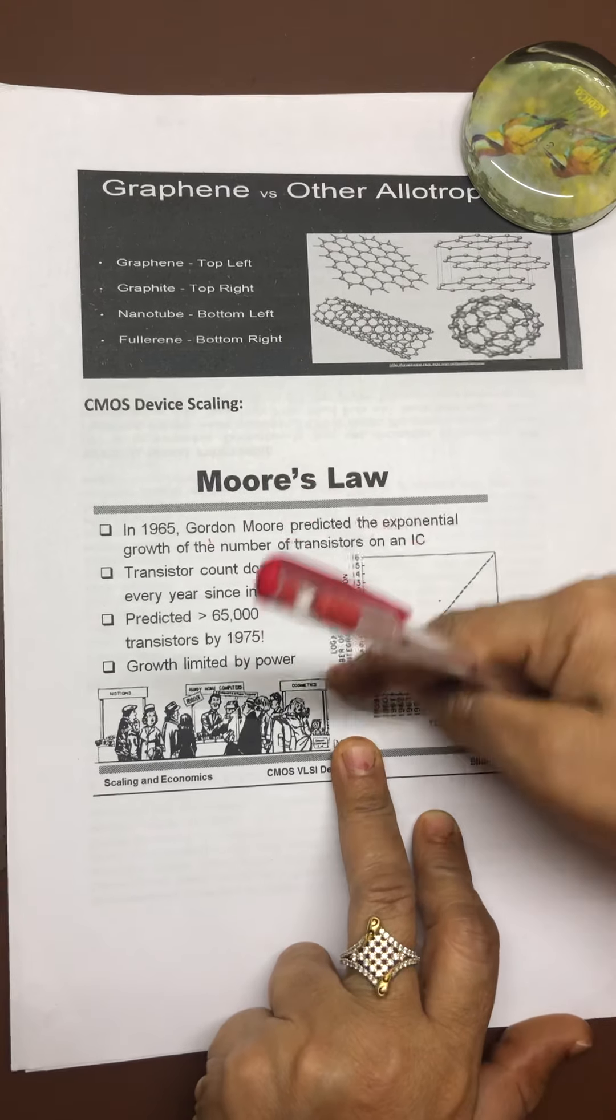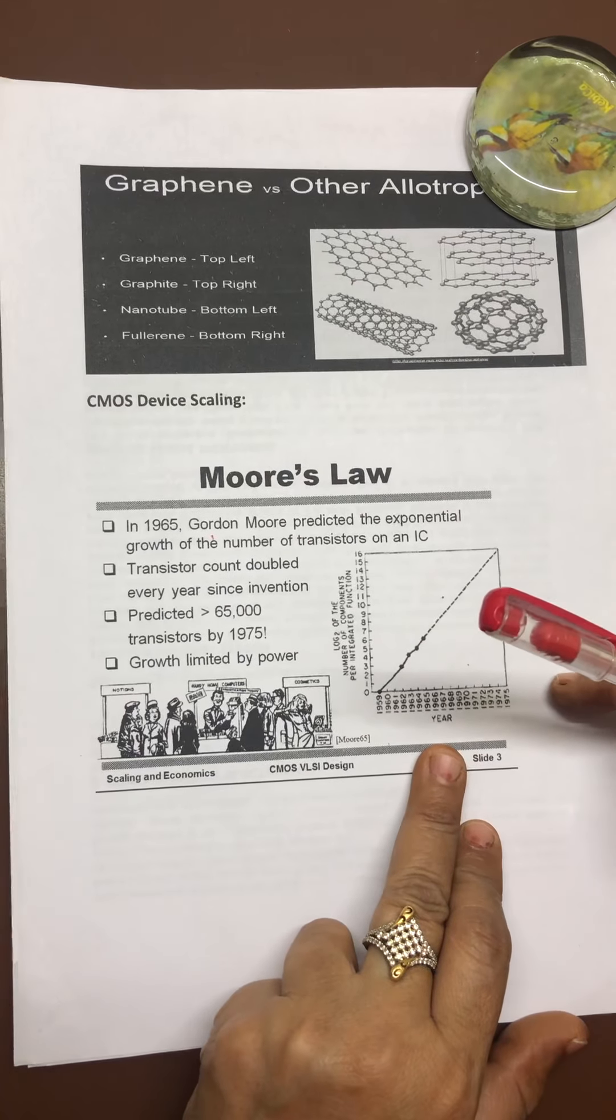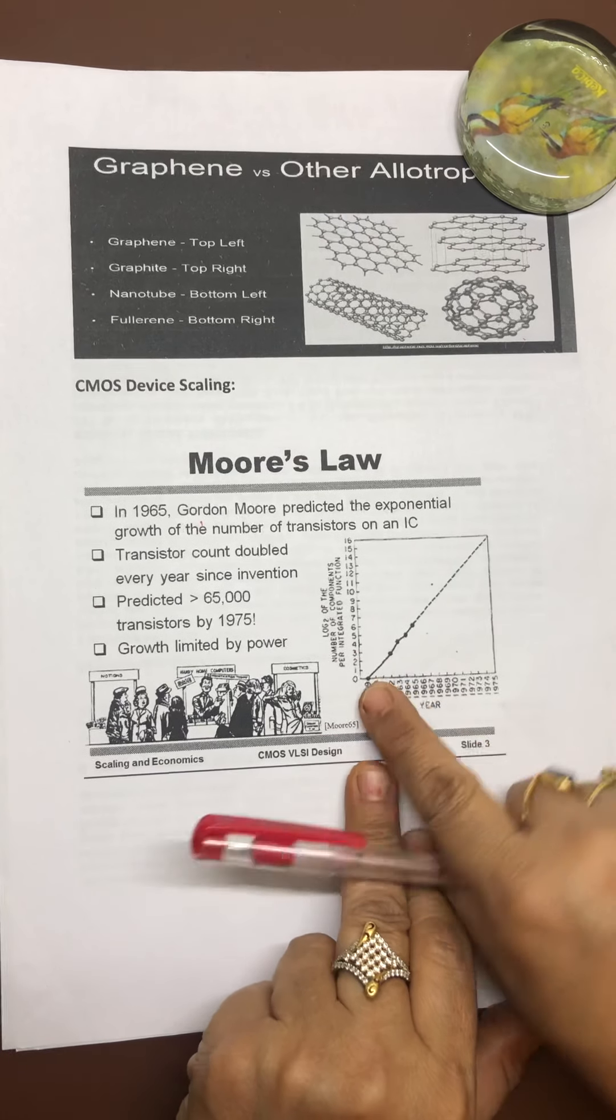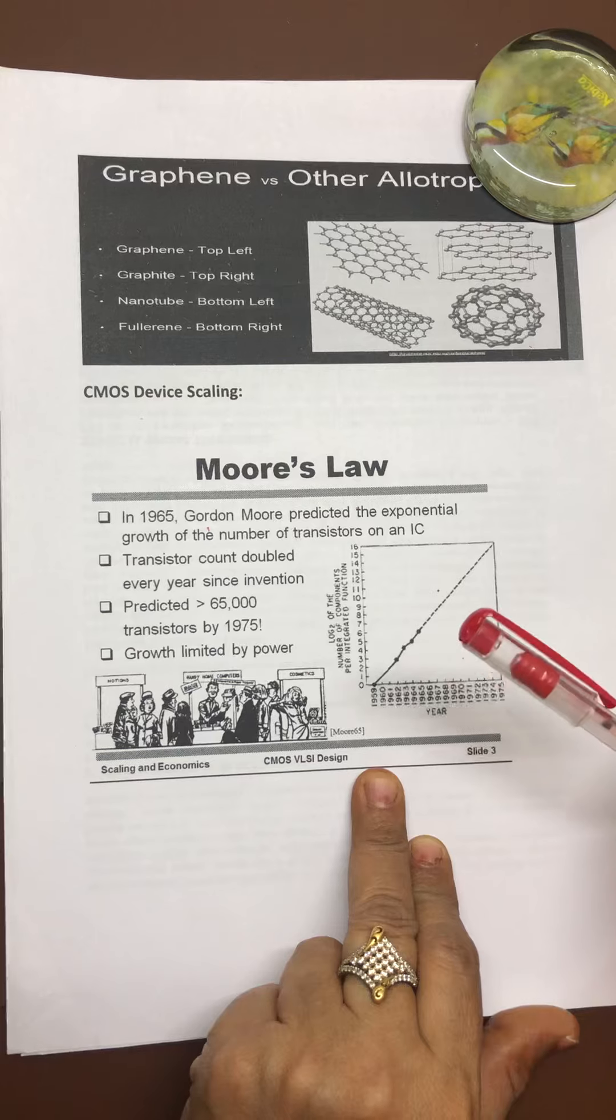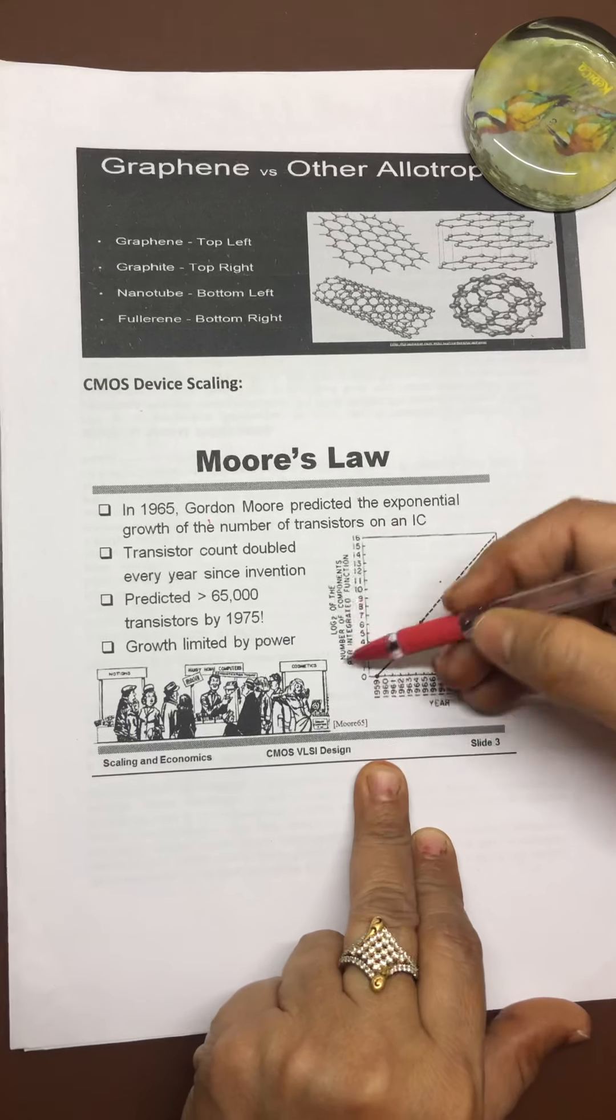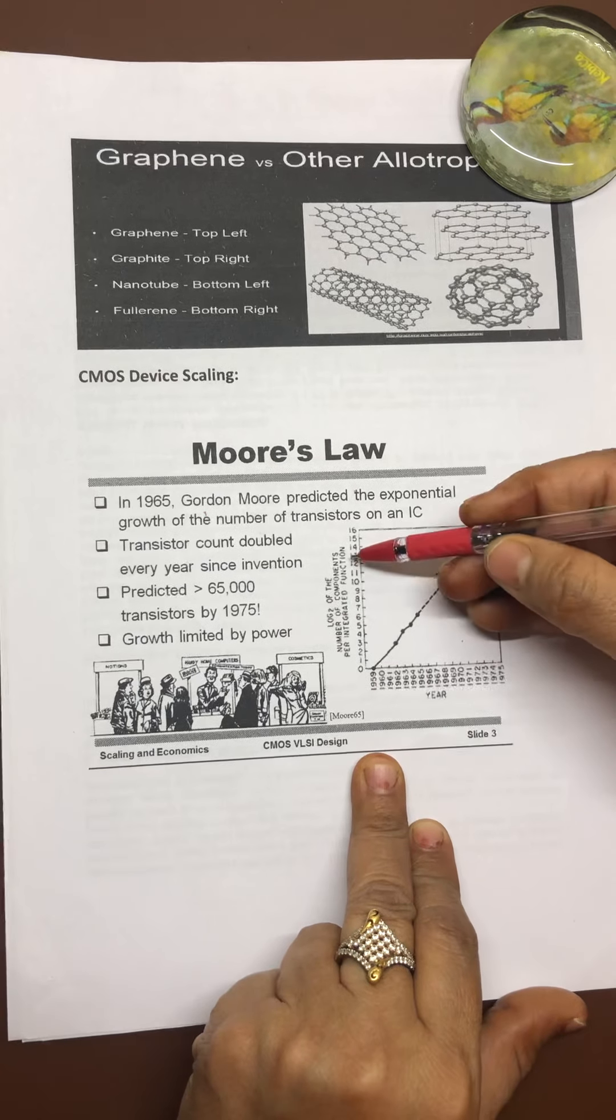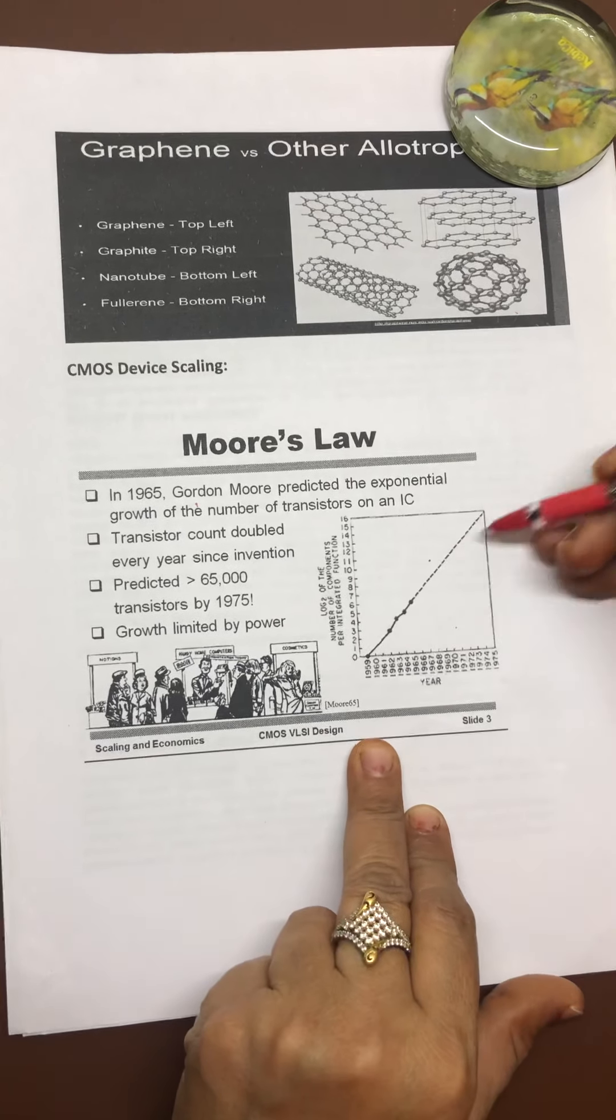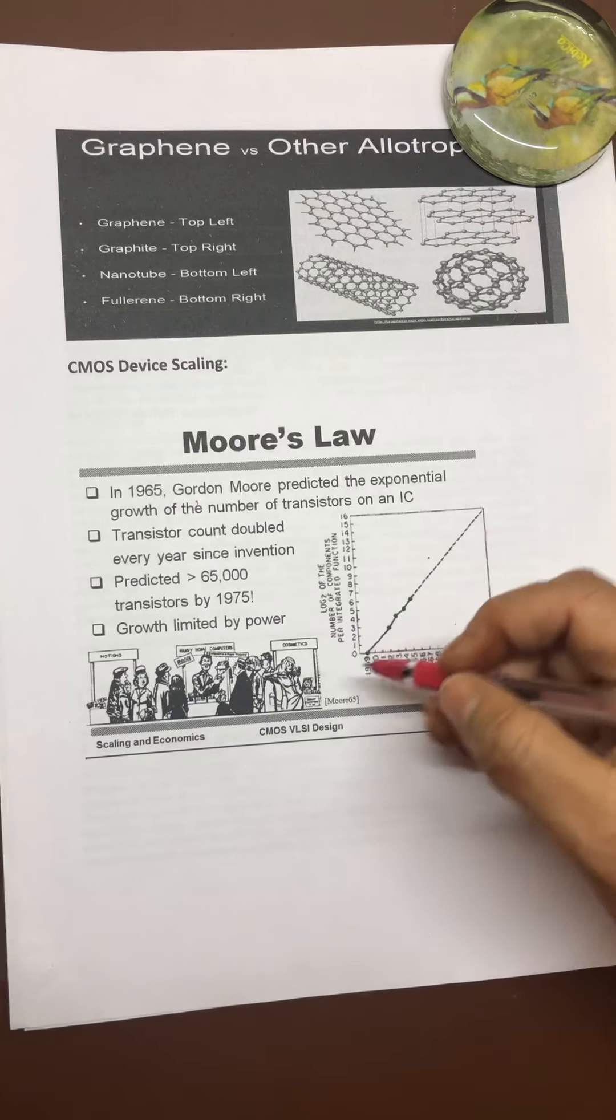He started evaluating from 1959, 1975, and so on till now. Gradually, the number of transistors are enhancing exponentially. This law gives the knowledge that as the years are passing, the size of devices is becoming compact and number of components is enhancing.